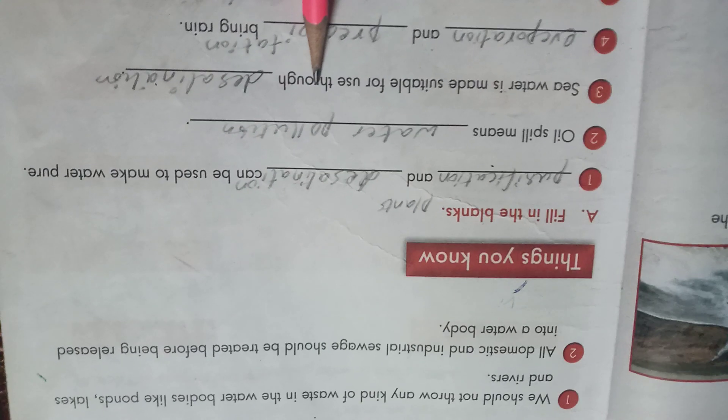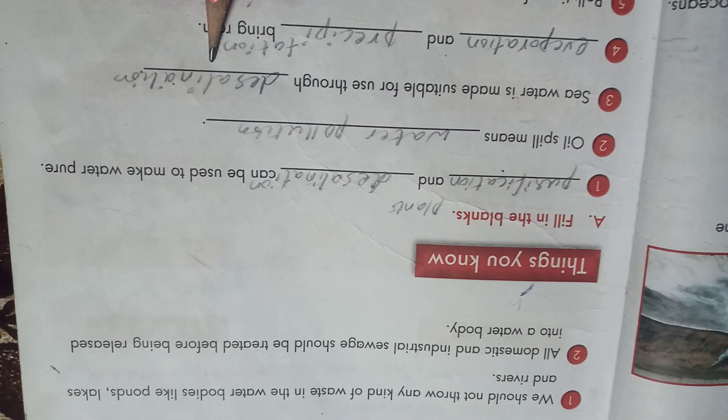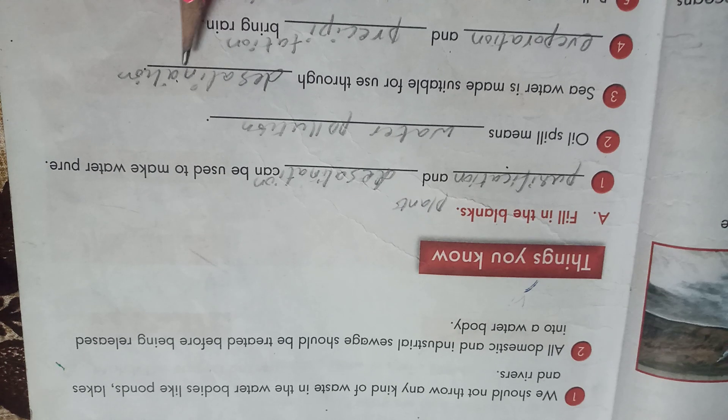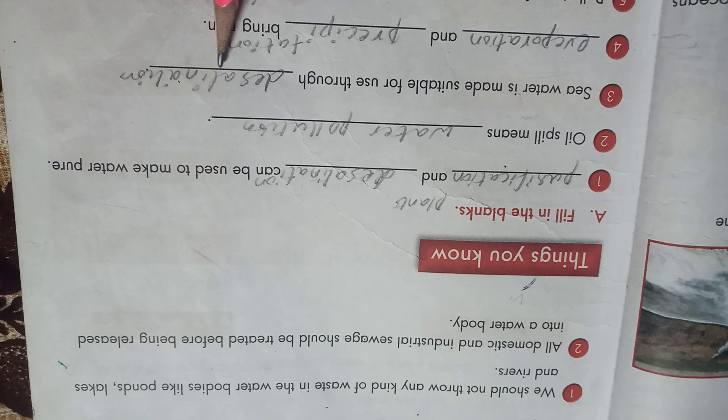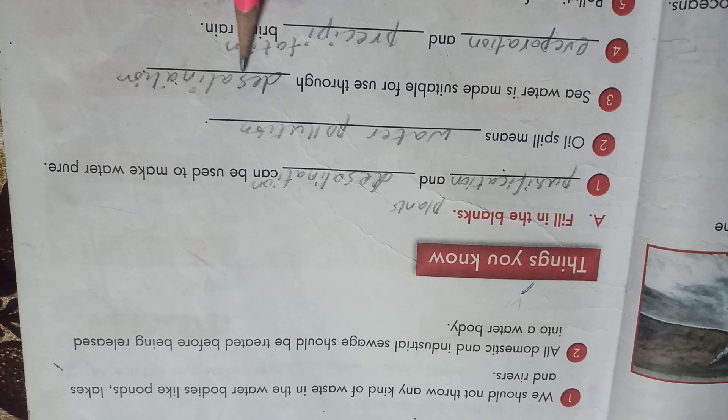So how do we make it drinkable? By the process of desalination. The process of producing fresh water is very expensive, but this process of purification is necessary. The fourth one is evaporation.